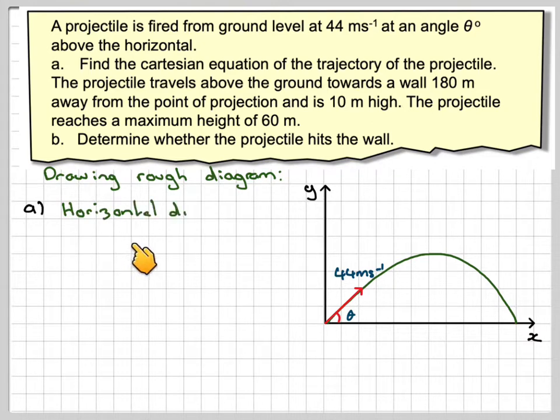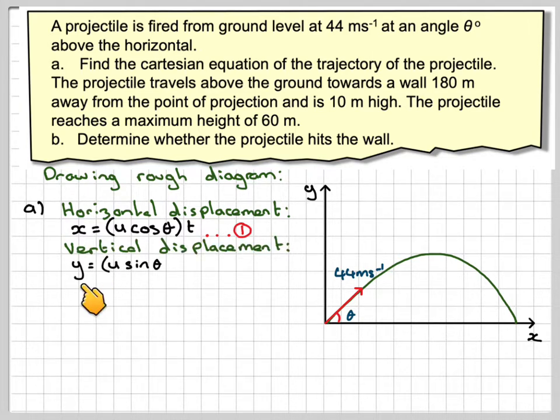The horizontal displacement is x equals u cos theta t, we'll call that equation 1. And the vertical displacement comes from y being equal to u sin theta t minus a half g t squared. We'll call that equation 1 and equation 2.